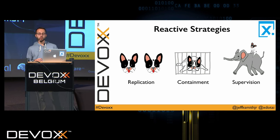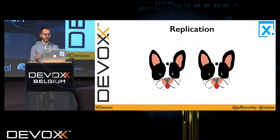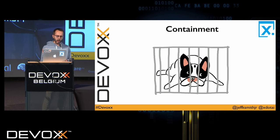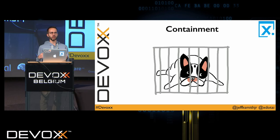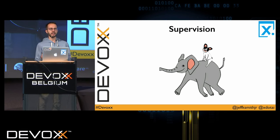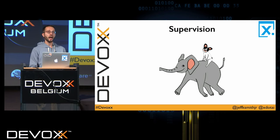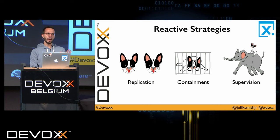Within the original reactive manifesto, three possible strategies are outlined for implementing reactive systems. First, replication — having more than one copy of your data, referring to both data at rest and data in motion. Next, containment — keeping errors bounded within a scope, knowing what are the limits of possible error conditions. And lastly, supervision — building hierarchies where one component is responsible for the failure of another and makes decisions based on it.